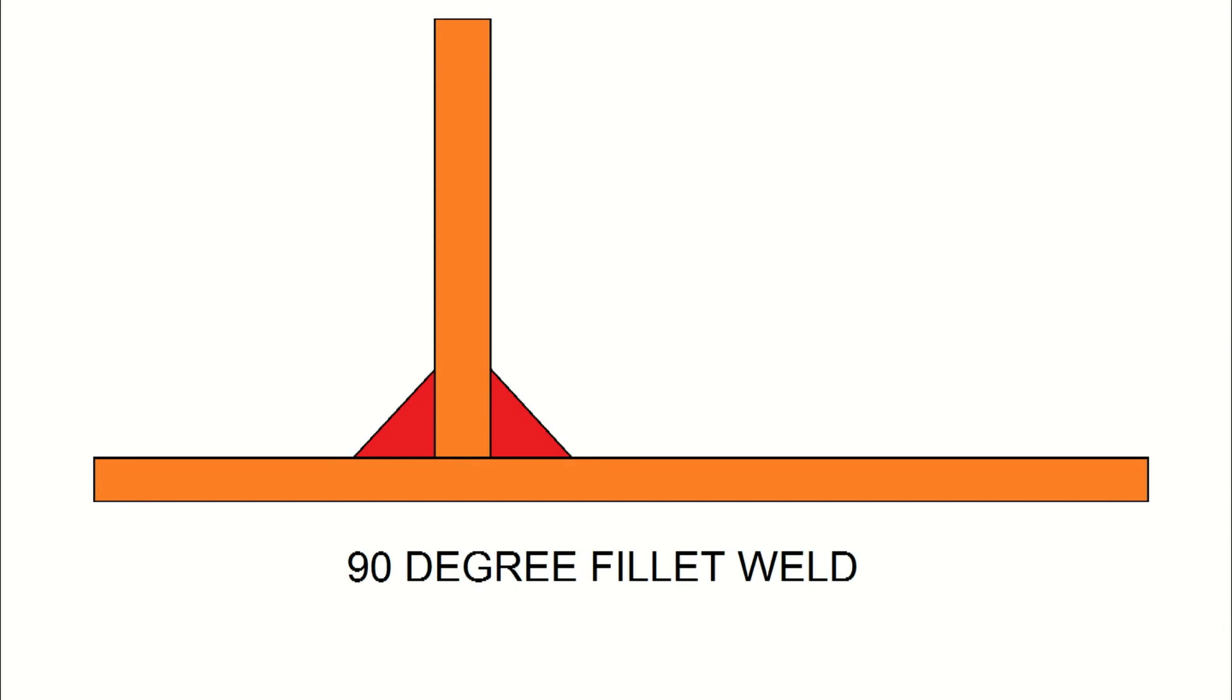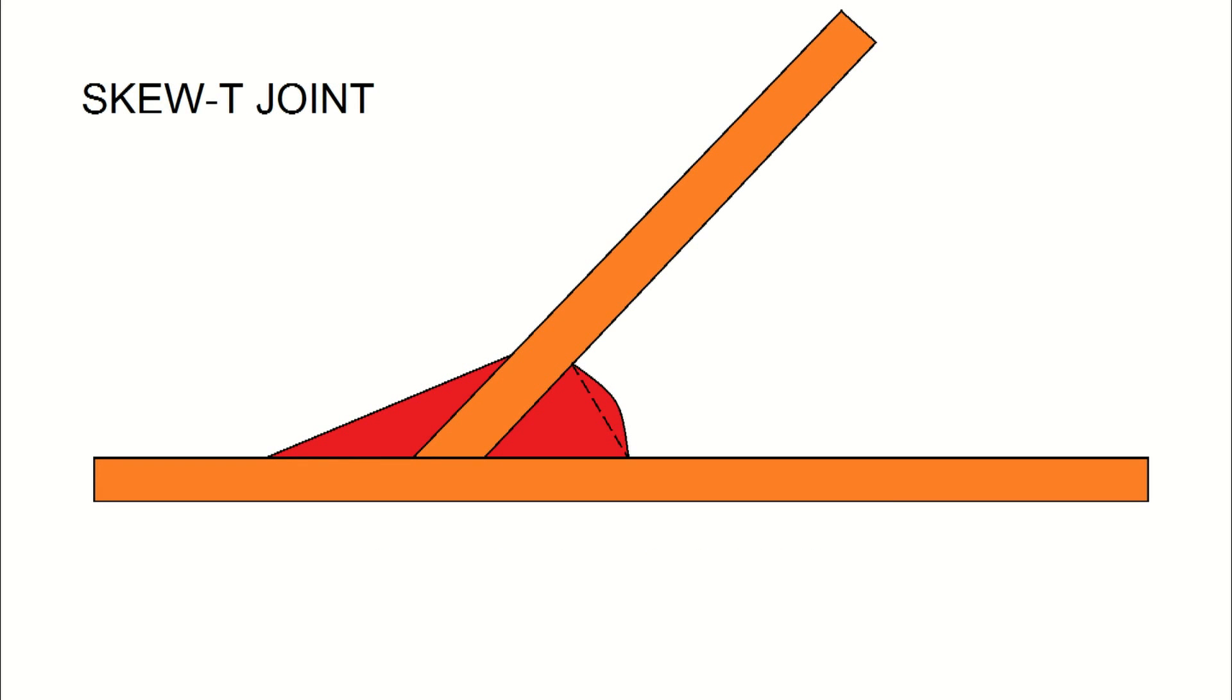Normally, we think of members being welded together at 90 degrees to each other. A special condition exists when members come together and are welded at angles other than 90 degrees and fillet welds are used to make the connection. These connections are called SKEW-T joints.